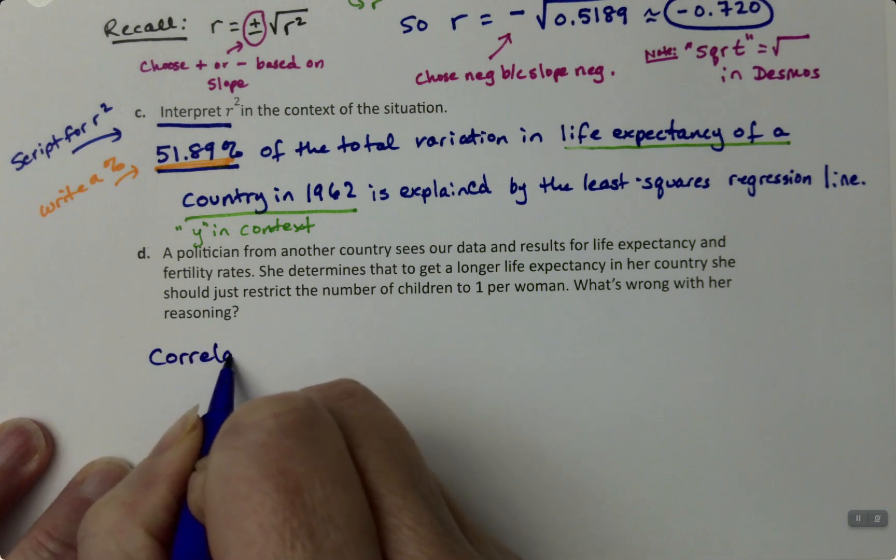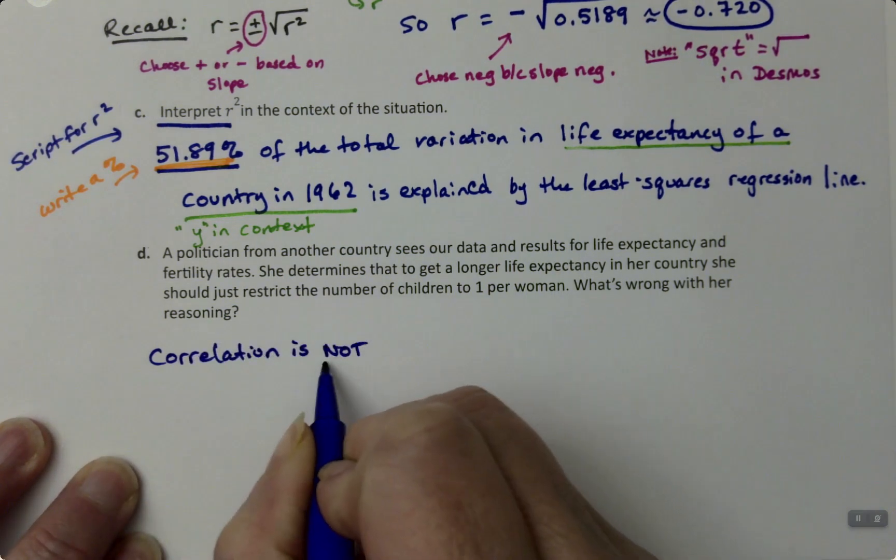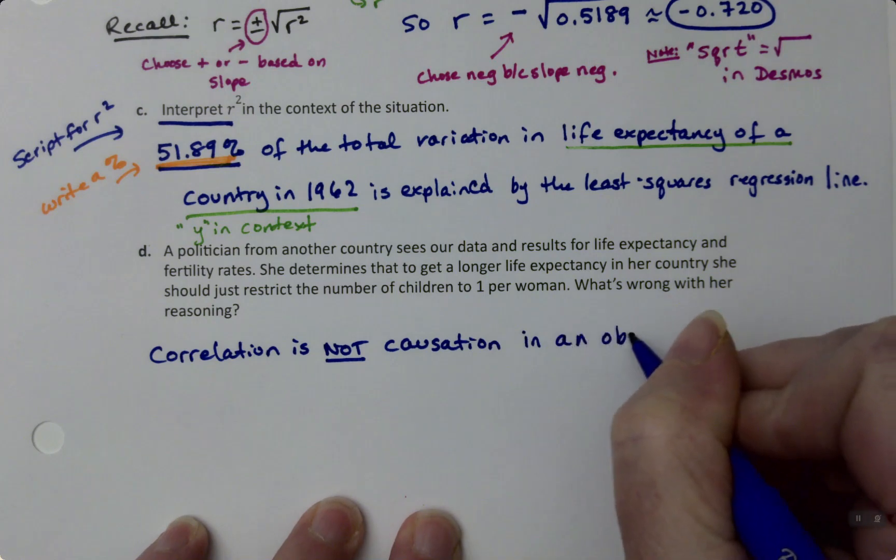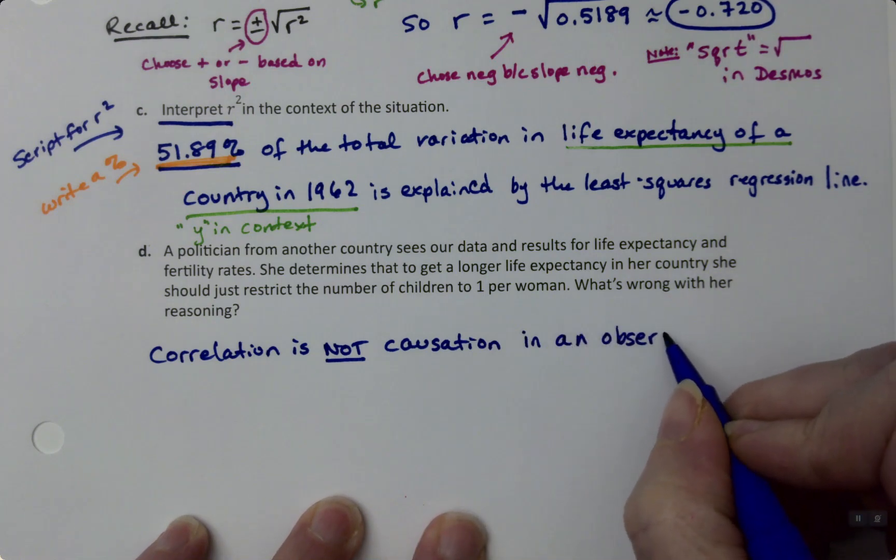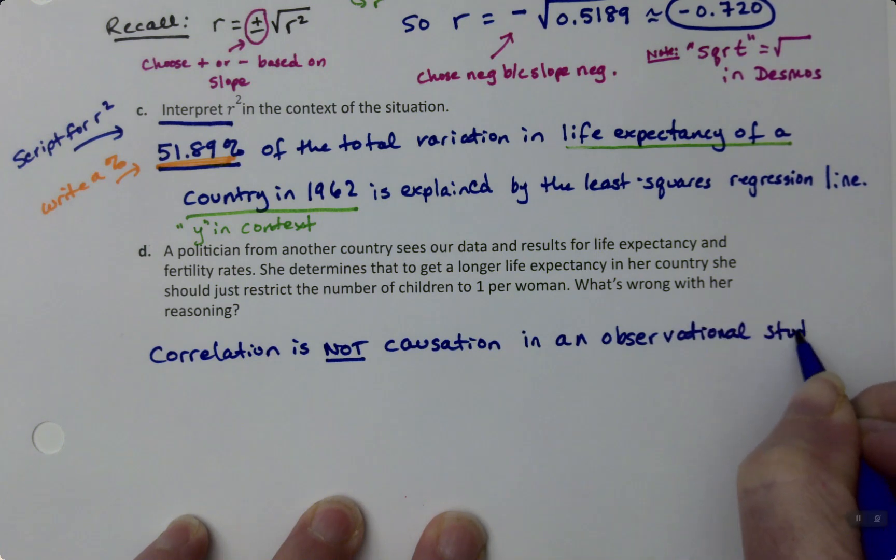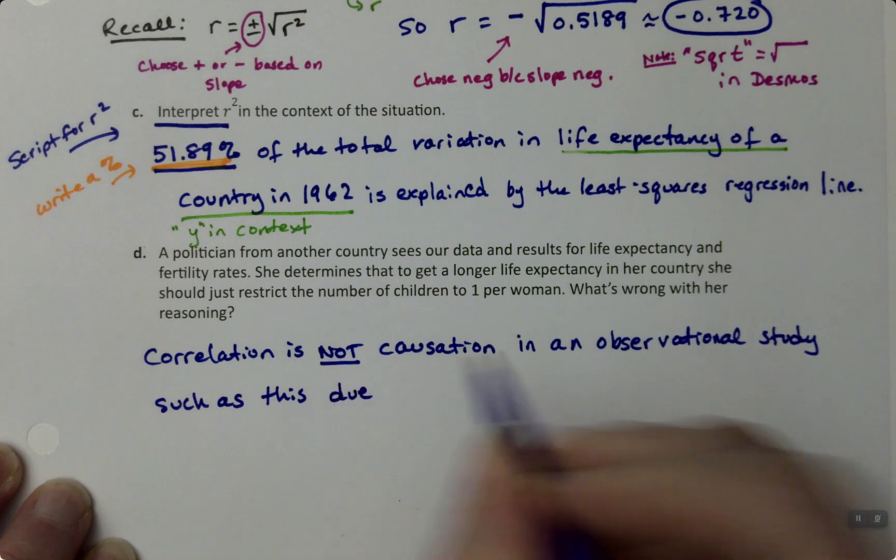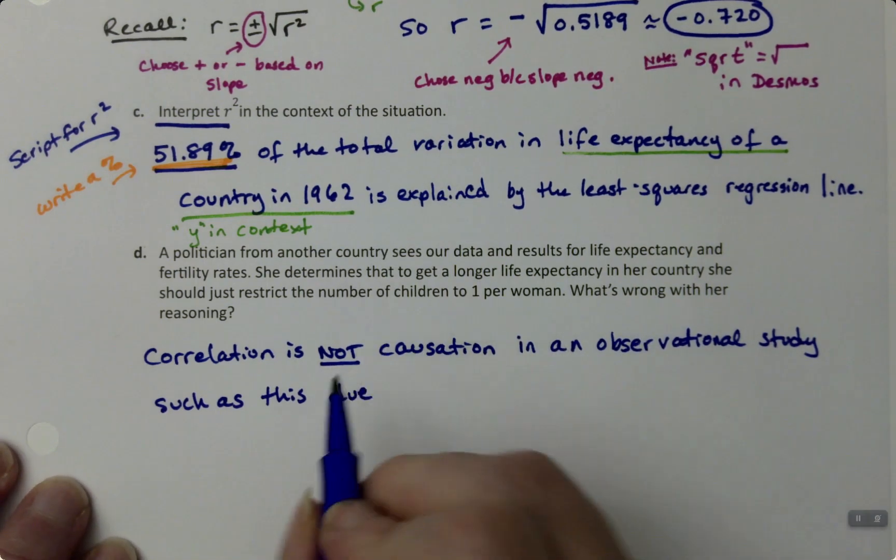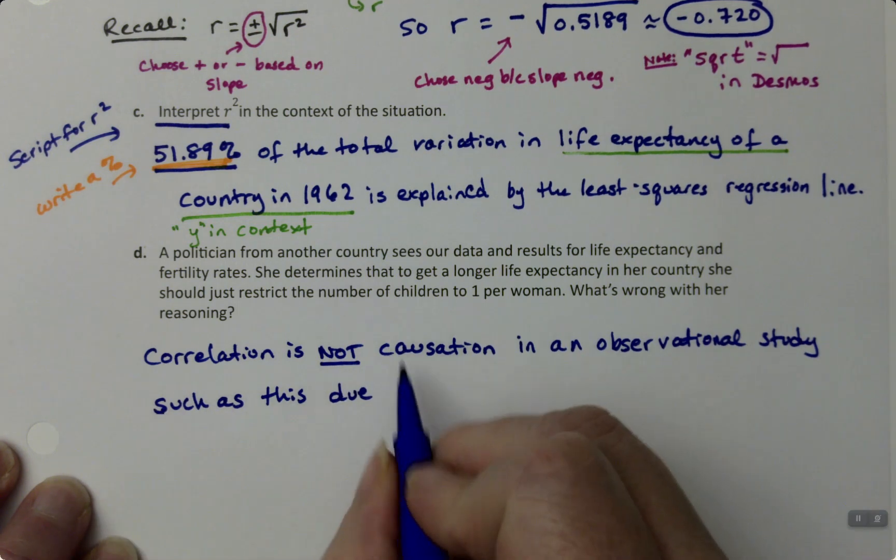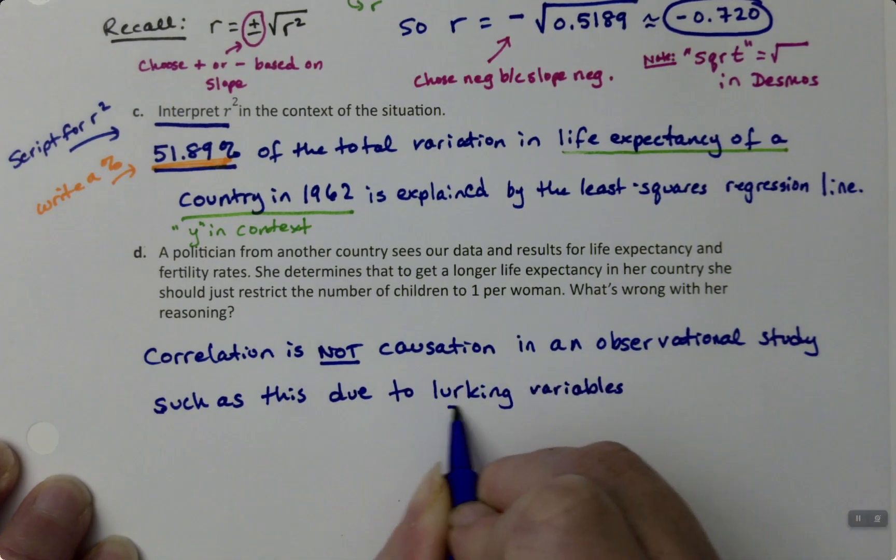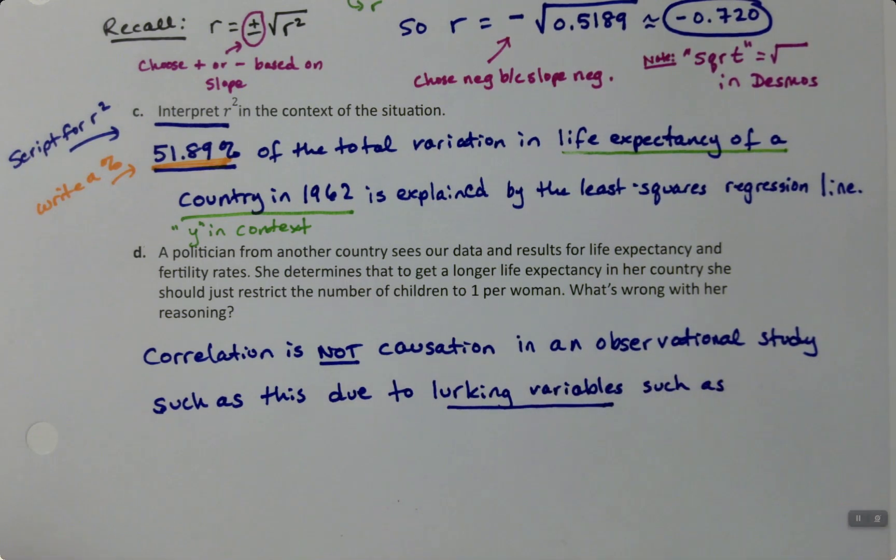But that's because there's something else going on. Alright, so correlation is not causation in an observational study, which this must be. It's not like we can go out and lower the life expectancy randomly for different countries. And the reason we can't figure out causation from correlation is that there are lurking variables. Such as - now here's the key that a lot of students forget: a lurking variable has to affect both the X and the Y.